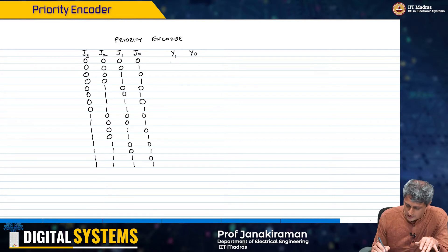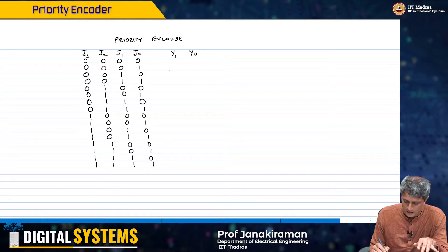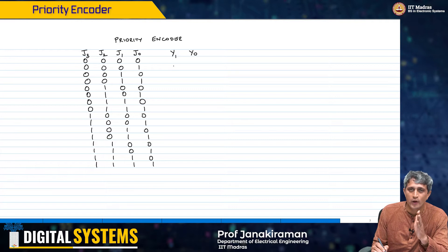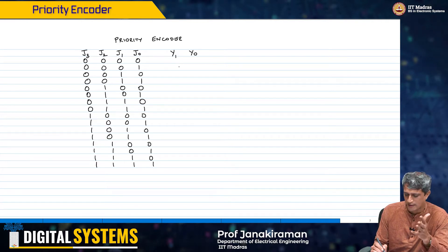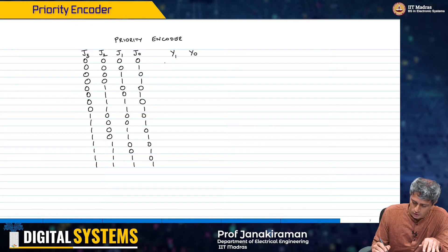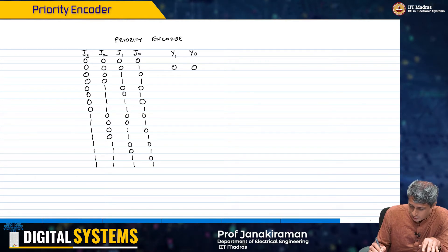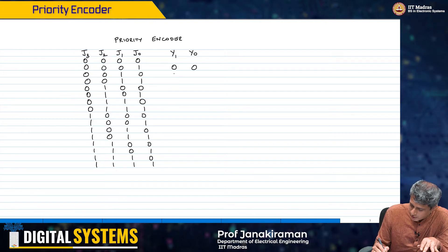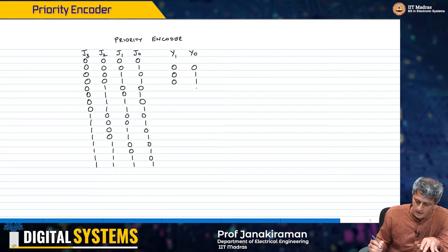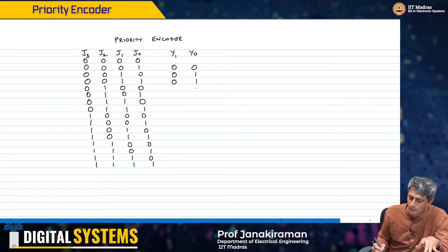When the lower bits are alone on, there is no problem — you just indicate which of those. So if it is j0, then we wanted the output to be 0,0. If j1 is on, then obviously you wanted this to go to 1, and the priority goes to j1.